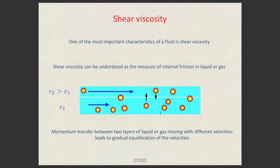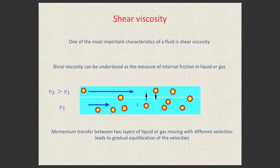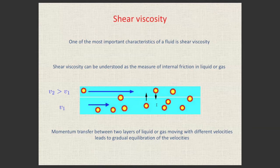Shear viscosity is a measure of internal friction in a fluid. Suppose two layers of fluid move at slightly different velocities. Particles from each layer penetrate the other, carrying momentum, which tends to equalize their speeds. Viscosity quantifies how much momentum is transferred by this particle exchange — it is the same physics as feeling heat when rubbing your palms together.